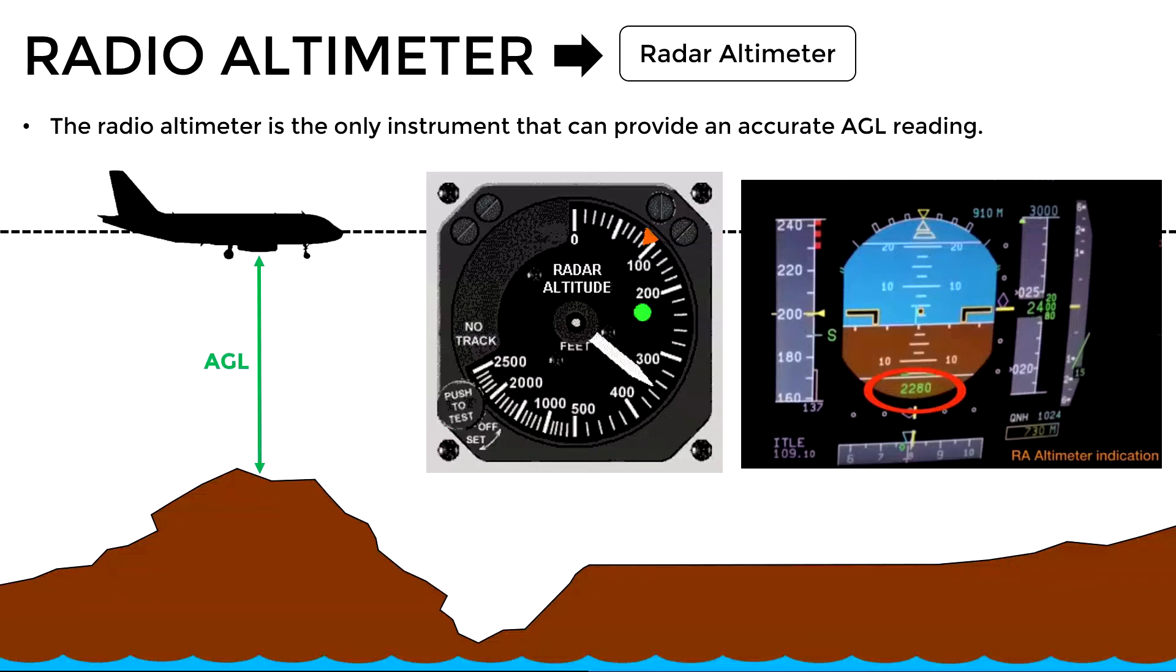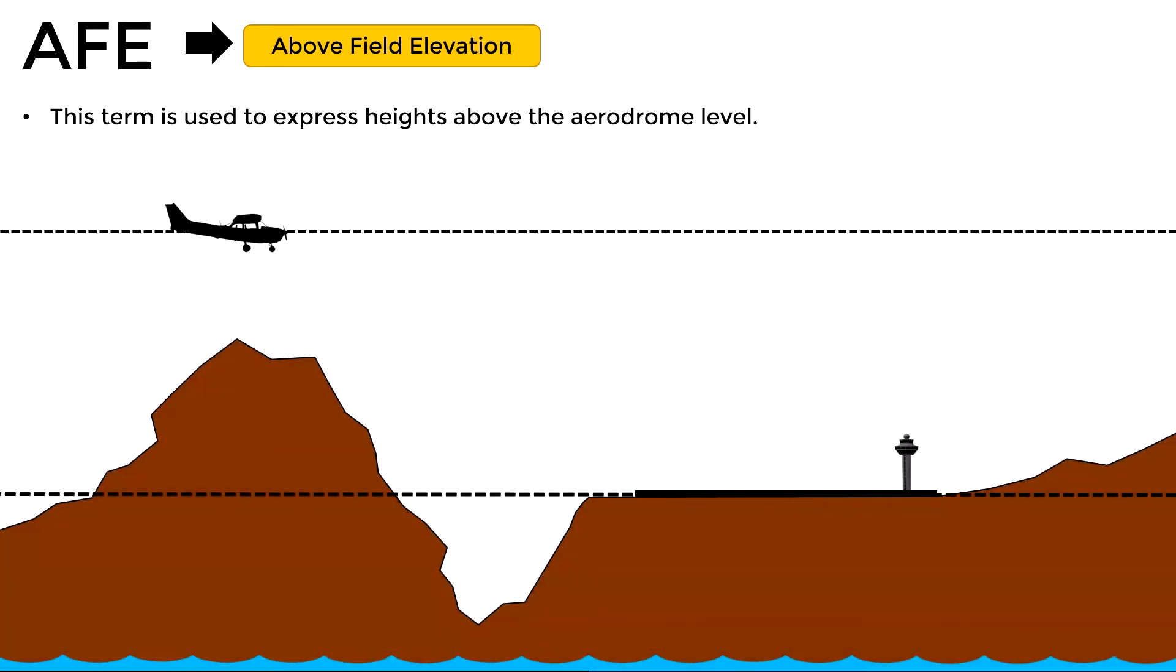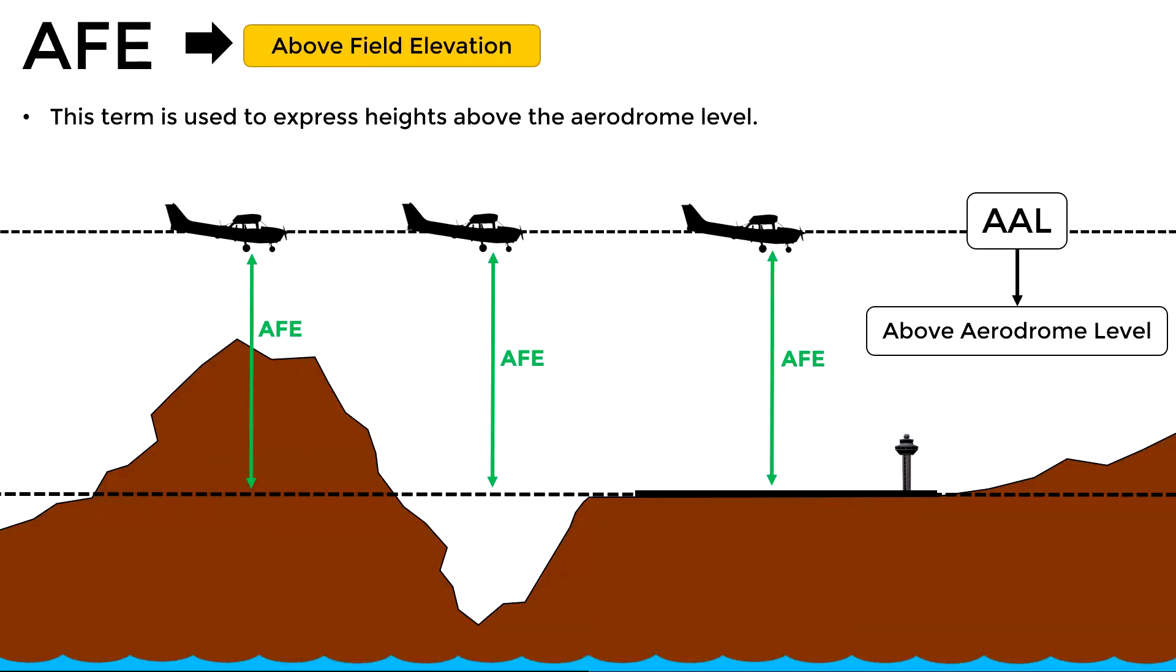In this case we use the next abbreviation which is AFE. It stands for above field elevation. This term is used to specify heights in relation to a certain aerodrome level. As we can see in this example, regardless of the terrain conditions below the aircraft, if it keeps level flight the AFE height will remain constant. Sometimes instead of using AFE, the abbreviation AAL is used which stands for above aerodrome level. However, it refers to the same concept.